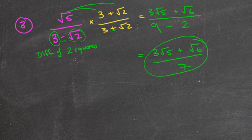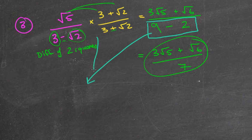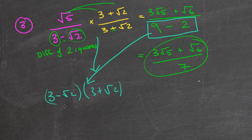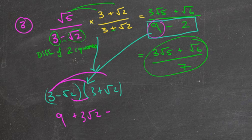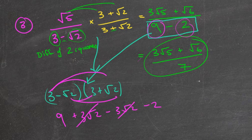That's the final answer - I can't simplify any further and I now have a rational number. If you aren't comfortable going straight to difference of two squares, the denominator three minus root two times three plus root two expands as: three times three is nine, then plus three root two minus three root two - those cancel - then minus two. That's where the nine minus two came from. But I highly encourage you to do it the quick way.